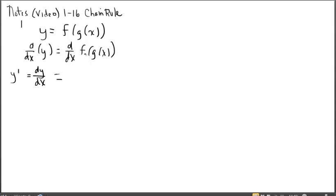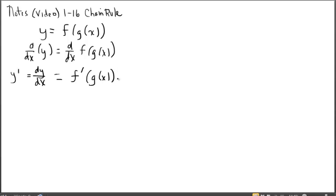So what does that derivative look like? It's not the product rule — not the first times derivative of the second plus the second times the derivative of the first. For the chain rule, once we establish what's the outside and the inside functions, we begin by finding the derivative of the outside function, written as f prime, but we leave g of x alone. Then we multiply — times the derivative of the inside function, g prime of x. That's the chain of factors.